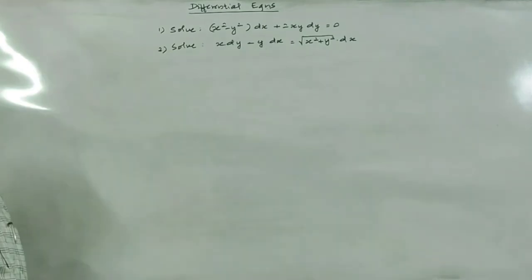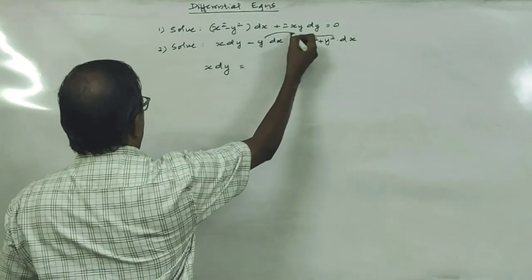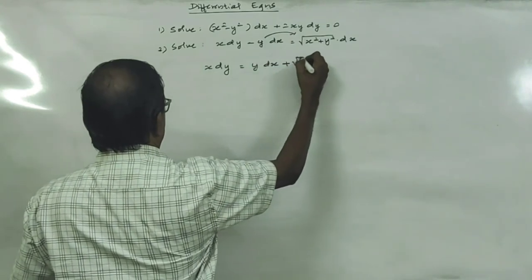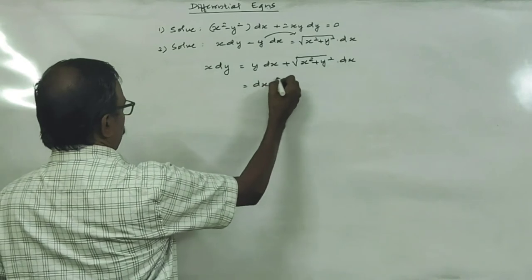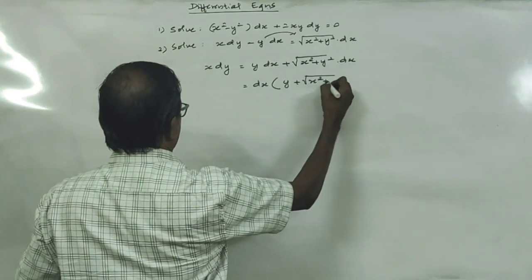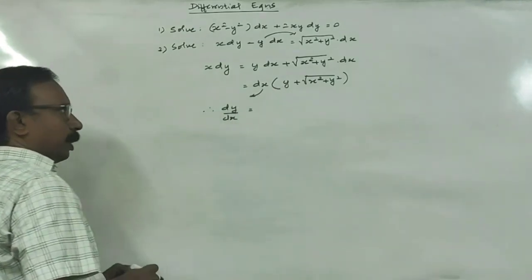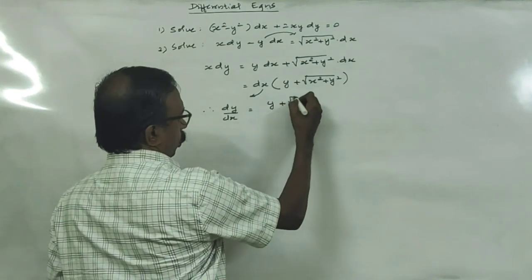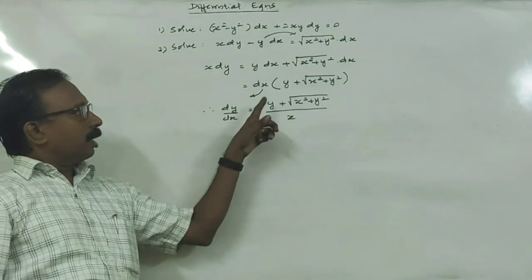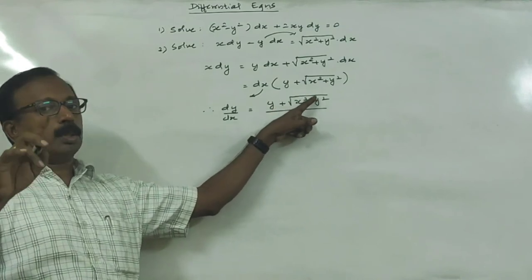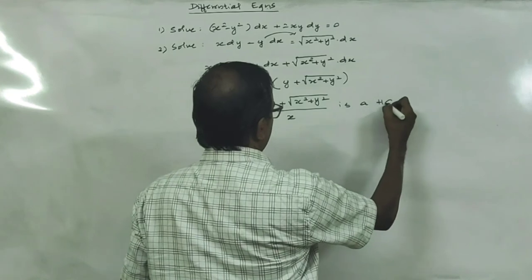Now we have one more homogeneous question. In the second question, x dy = y dx + √(x² + y²) dx. Taking dx as common on the right side: x dy = [y + √(x² + y²)] dx. Therefore, dy/dx = [y + √(x² + y²)]/x. Here degree of y is 1, and degree under the root is effectively 1, so it is a homogeneous differential equation.